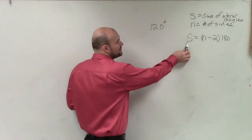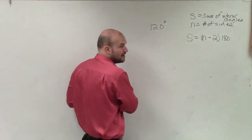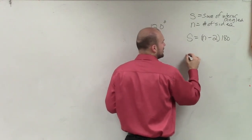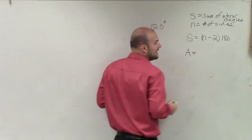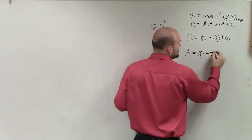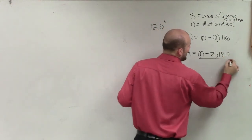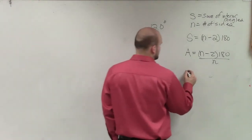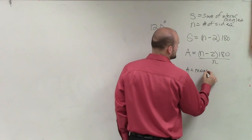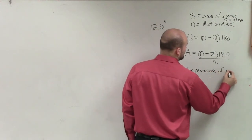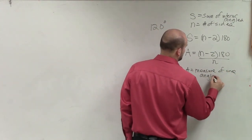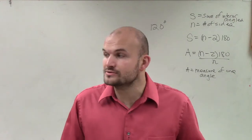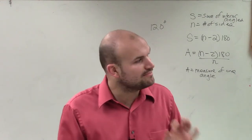So one thing, the problem though, is we don't know what the sum is. So we can't use this formula. But there was another formula, where the measure of an angle is equal to the sum divided by the number of angles. In this case, where A equals the measure of one angle. And that works only for a regular polygon. So there's two formulas. One deals with the sum, and one deals with the measure of an individual angle.